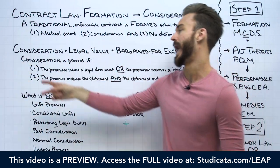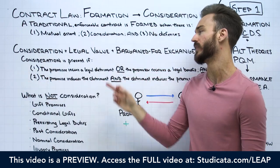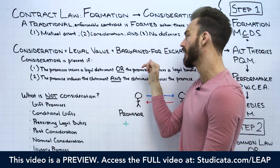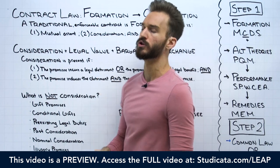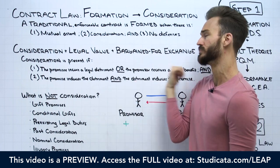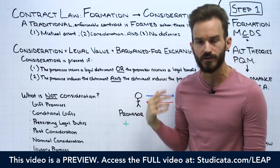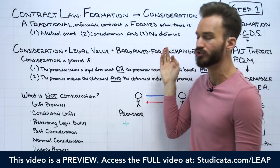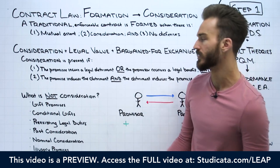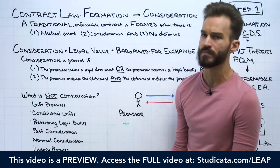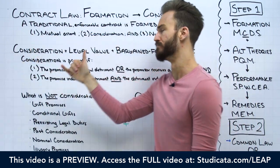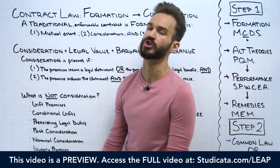There are going to be two main elements or two requirements. We need legal value involved in the offer and acceptance, and a bargained-for exchange. Legal value means that the promisee is incurring a legal detriment or the promisor is receiving a legal benefit. A bargained-for exchange — or reciprocal inducement — means that the promise induces the detriment and the detriment induces the promise. If we have legal value and a bargained-for exchange, consideration is present.